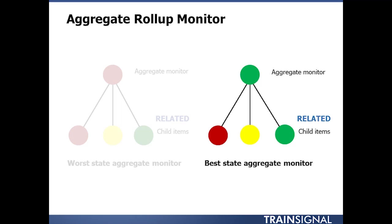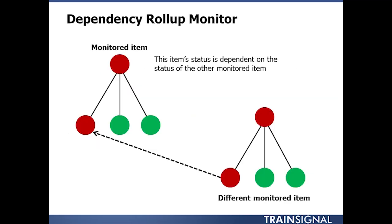So in the case of your eight DNS servers, as long as one is operating then all of your services can operate theoretically. So as you roll up, you may look at that and say the aggregate monitor will be green.